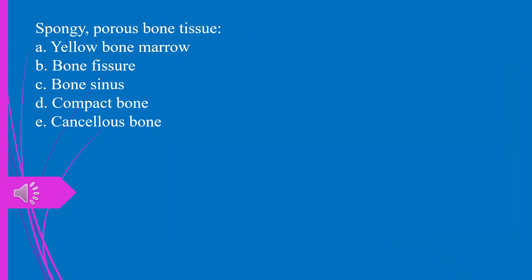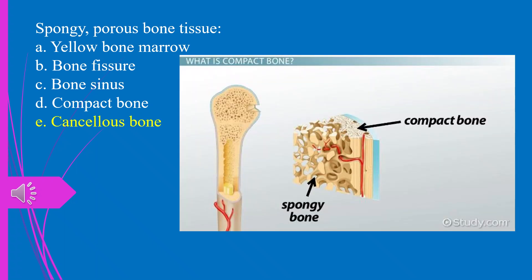Question 35. Spongy, porous bone tissue: a) yellow bone marrow, b) bone fissure, c) bone sinus, d) compact bone, e) cancellous bone. The answer is e, cancellous bone.